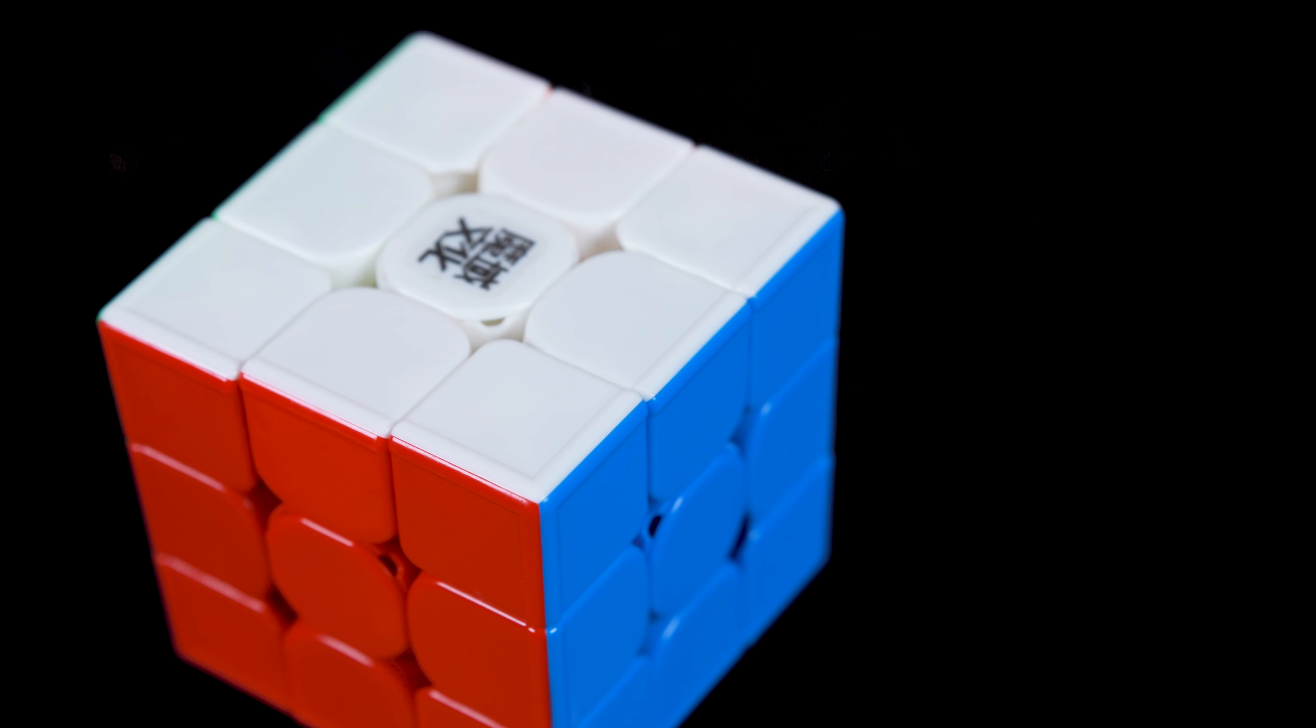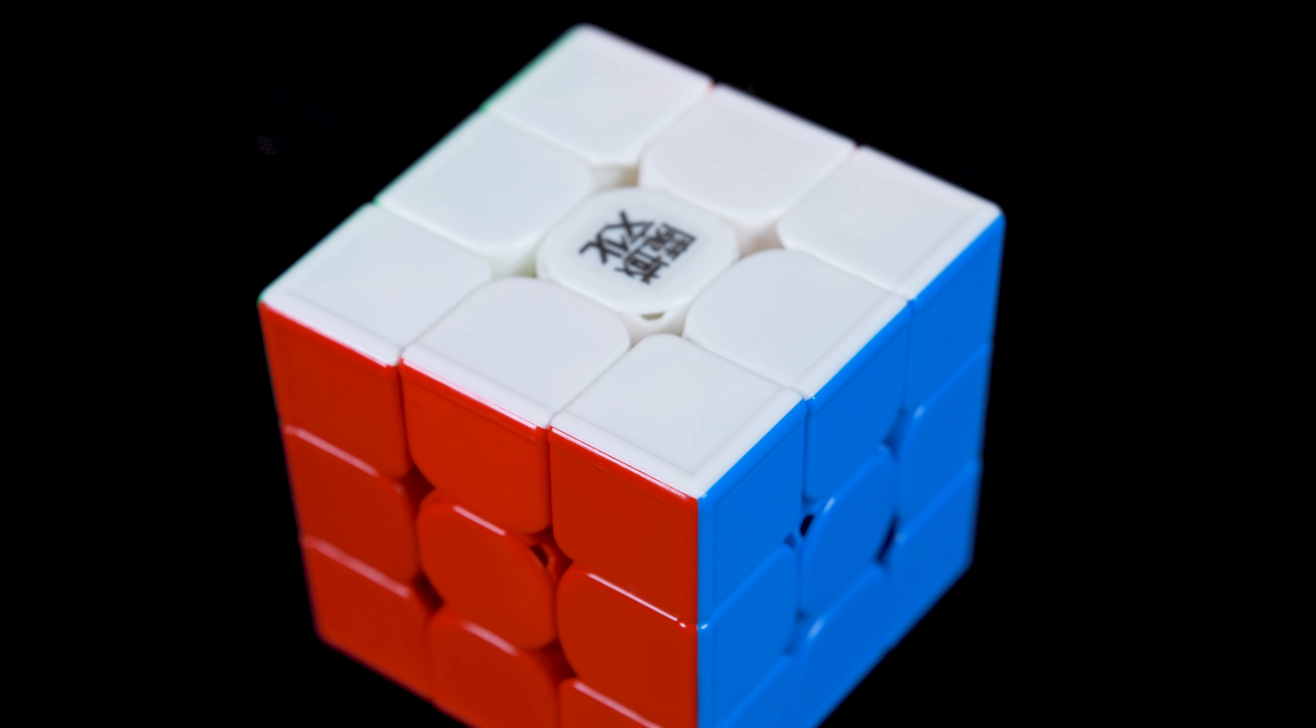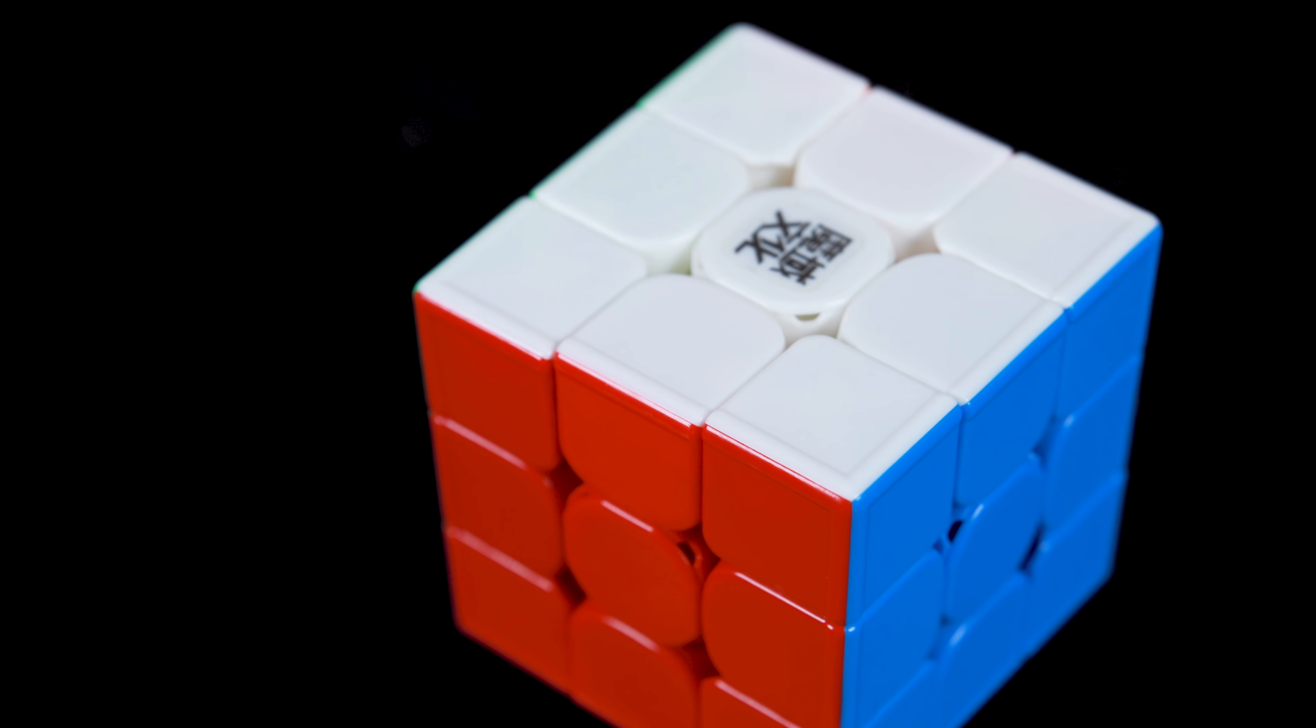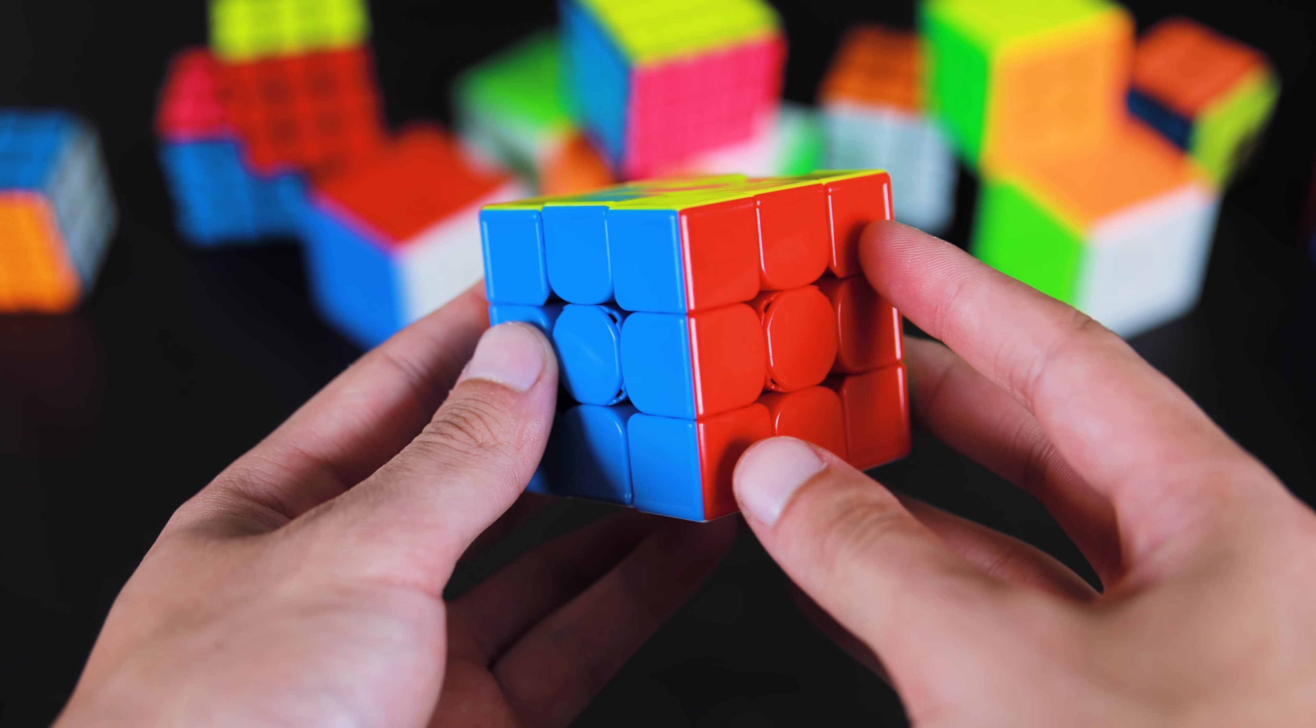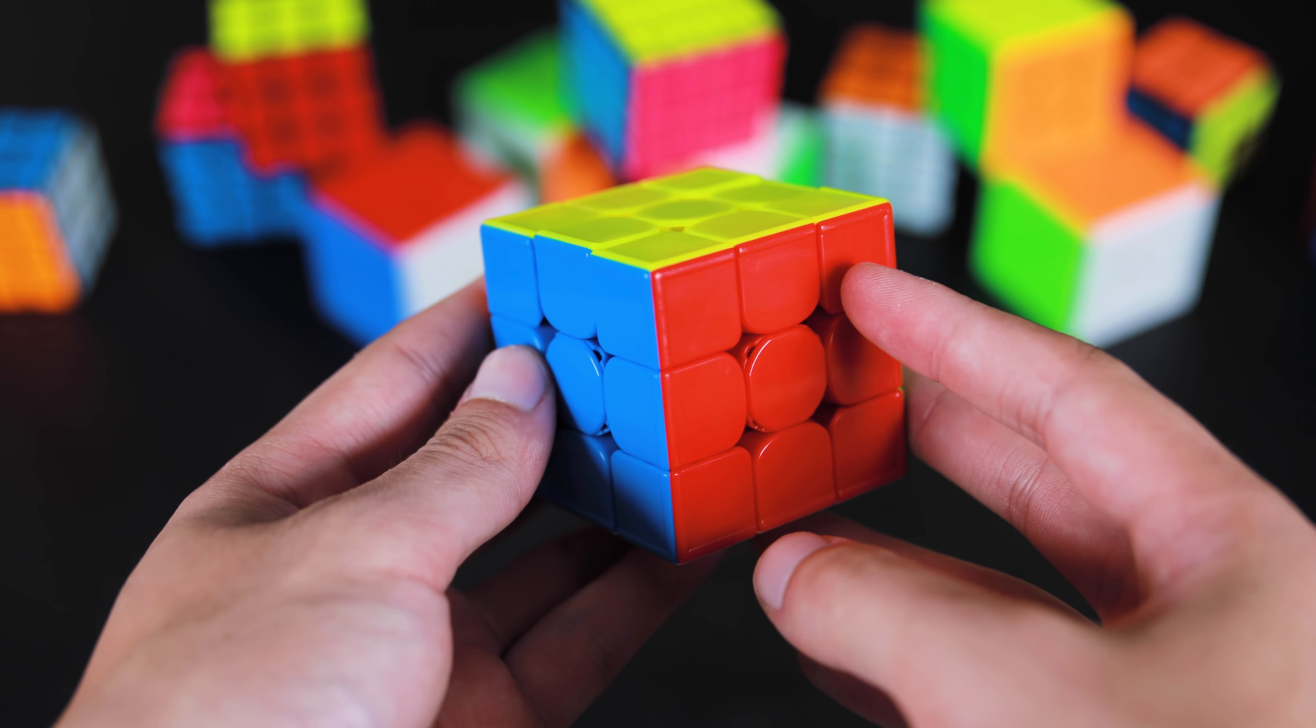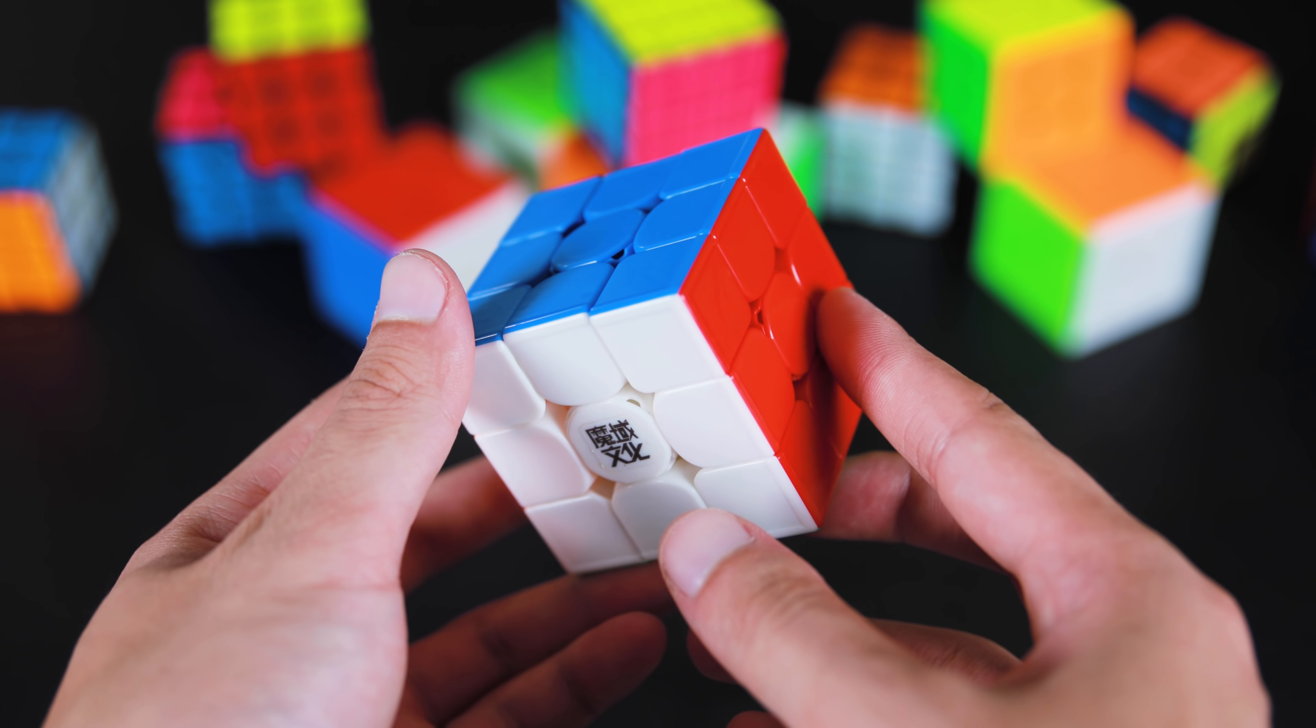The biggest design changes on the GTS3 are the addition of ridges along the outside of the puzzle. We've seen this on Mega Minx's and some 2x2 models previously, but this is the first time that it has come to a serious 3x3.